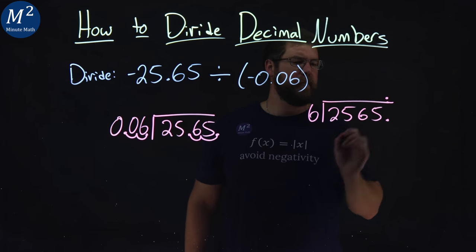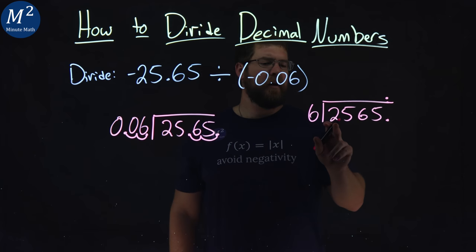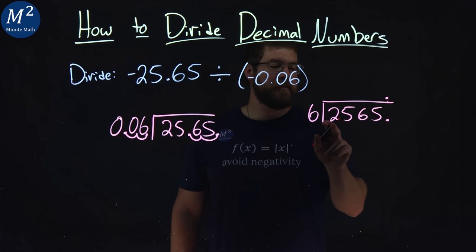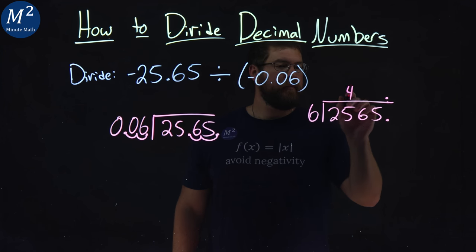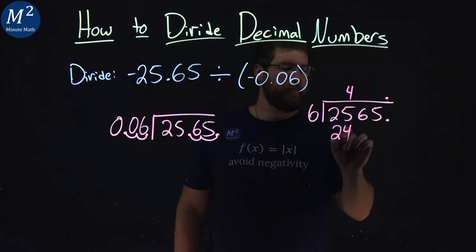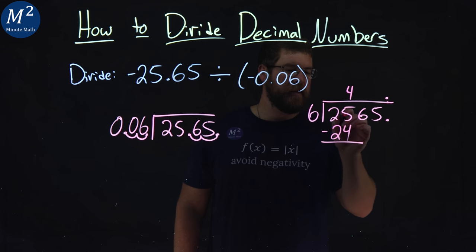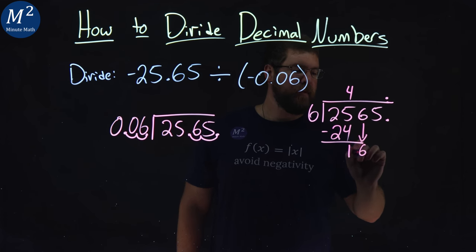Remember, the decimal place is right here. A 6 goes into a 2. We can't. A 6 goes into a 25, though. We can do that 4 times. 4 times 6 is 24. Subtract. 25 minus 24 is 1. Let's bring down the 6 here.